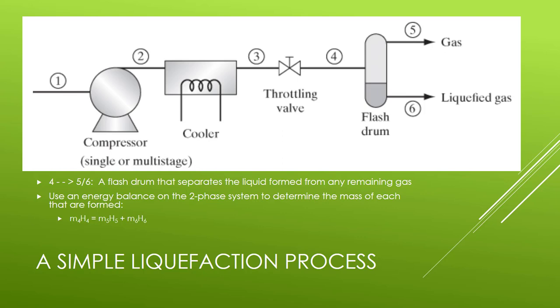And finally, we're going to separate the two phases that have been formed. So, we send it to a flash drum. This is going to just use gravity to let the liquid drop to the bottom and be removed via pipe. And the gas can be free to leave out of the top of the flash drum. An energy balance can be used on this two-phase system to determine what the mass is of each of the two phases that are formed. The mass times enthalpy coming in will equal the mass times enthalpy of the two streams that leave.